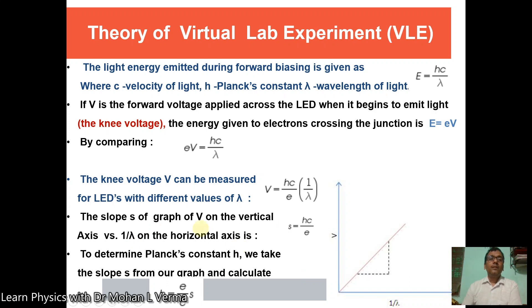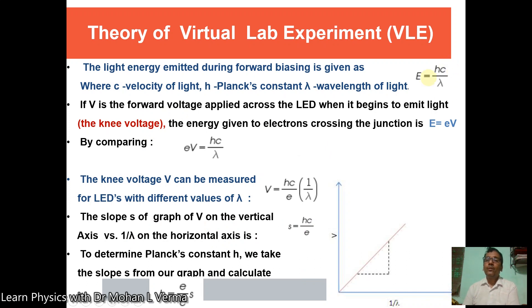The light energy emitted during forward bias is given as E = hc/λ, where c is the speed of light, h is Planck's constant, and λ is the wavelength of light.